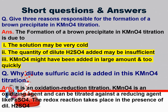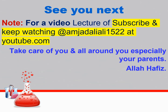Why is dilute sulfuric acid added in KMnO4 titration? It is a redox titration — KMnO4 is an oxidizing agent and is titrated against a reducing agent like FeSO4. The redox reaction takes place in the presence of dilute sulfuric acid. See you in the next video lecture. Subscribe and keep watching Amjad Ali. Take care of yourself and those around you, especially your parents. Allah Hafiz.